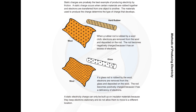When a rubber rod is rubbed by a wool cloth, electrons are removed from the wool and deposited on the rod. The rod becomes negatively charged because it has an excess of electrons.